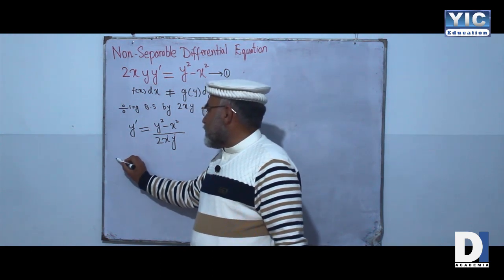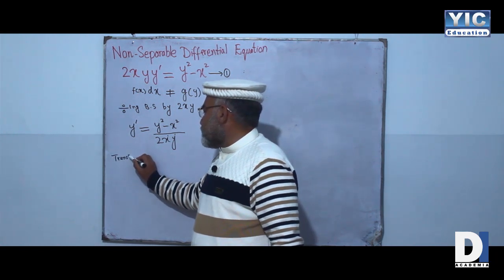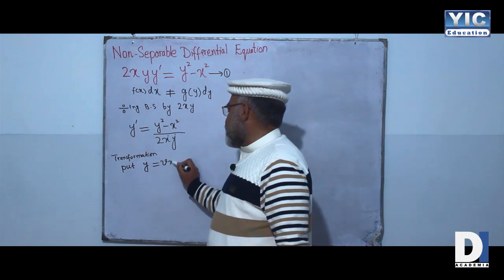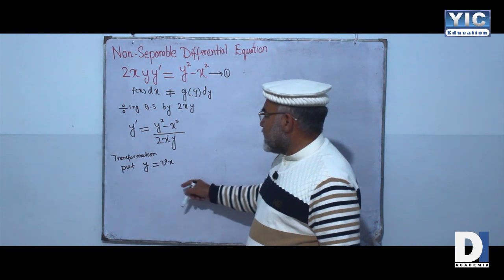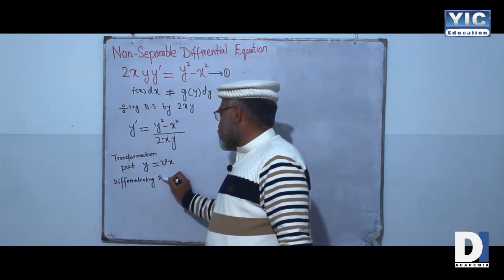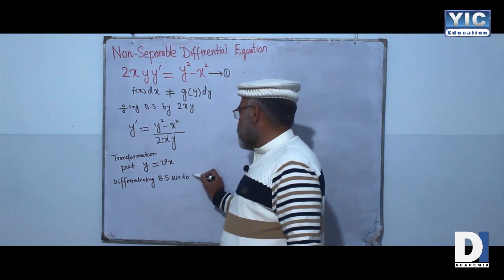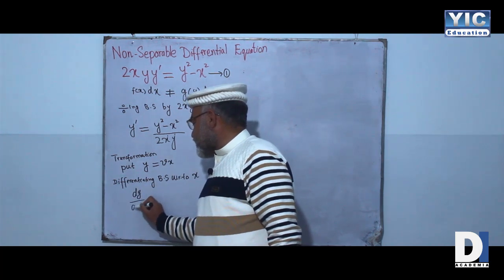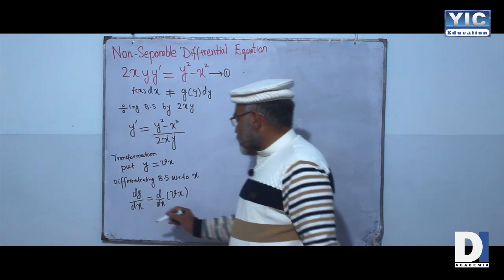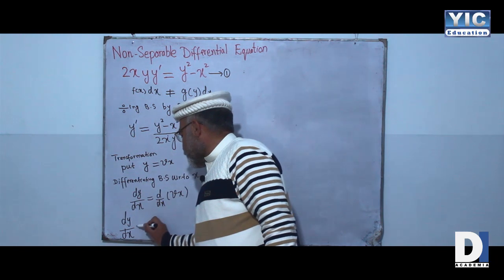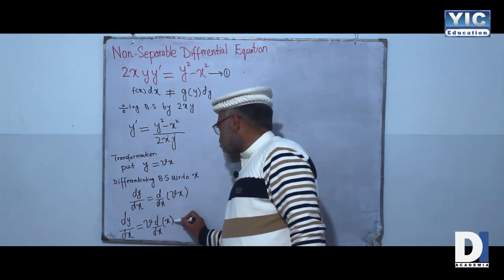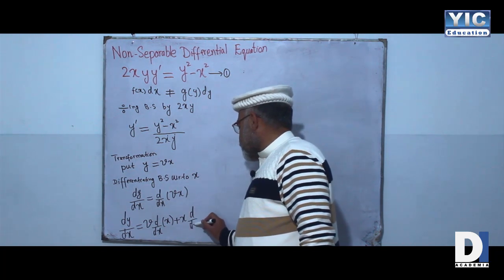For this we will do a transformation. The transformation is of the form: put y equal to vx. Differentiating both sides with respect to x, we apply the product rule: v times differentiation of x plus x times differentiation of v.